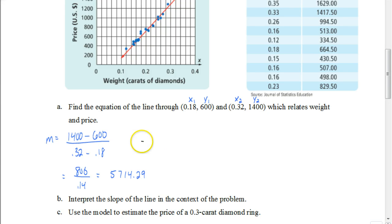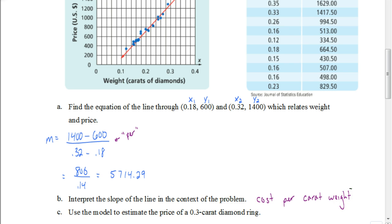Before finishing part A, let's talk about interpreting the slope in context for part B. Slope is a ratio — a fraction relating the numerator to the denominator. The numerator (1400 and 600) represents cost, and you can think of the fraction bar as the word 'per.' The denominator represents carat weight. So the slope gives us the cost per carat weight — $5,714.29 for every carat, meaning as you increase carat weight by one, the cost increases by $5,714.29.